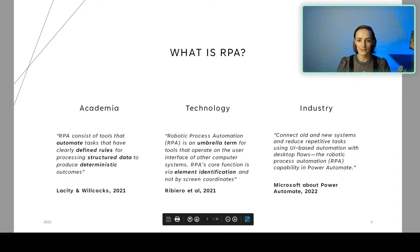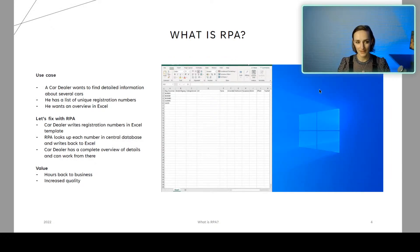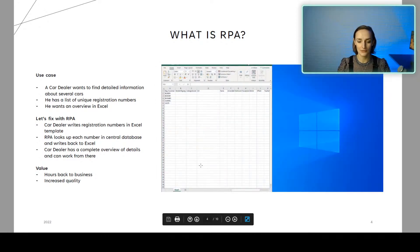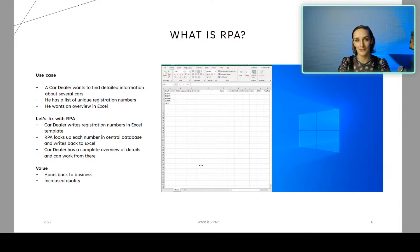Now let's look at a robot in action with a really simple use case. We imagine that we are a car dealer wanting to get more detailed information about several cars in our portfolio. There's a list of unique registration numbers — the number plates — and he wants an overview in Excel. We had some technical issues so I can't show the demo today, but this is a robot working in the UI. He gets all his number plates back in Excel, gets a complete overview, and by that gets many hours back to his business — time he can spend selling cars and making customers happy. He also gets increased quality.